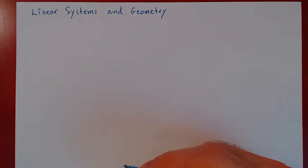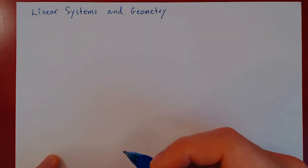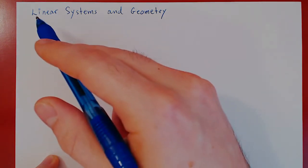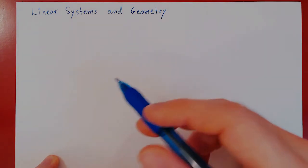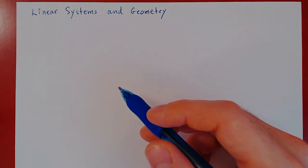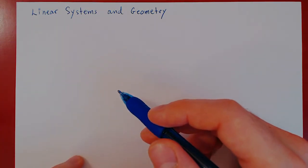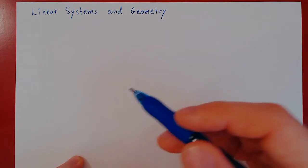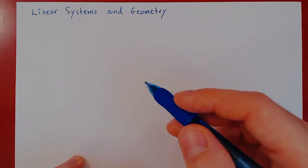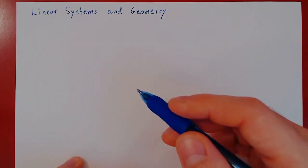In this video, we will have a quick look at the geometry in solving linear systems. We will consider two examples: one equation in two variables, then two equations in two variables.